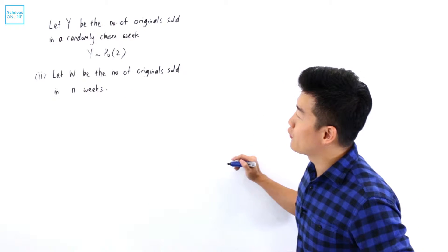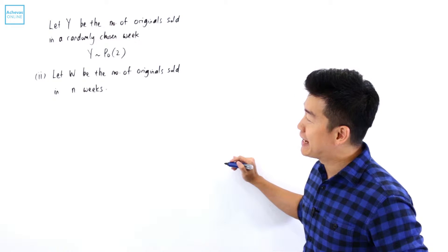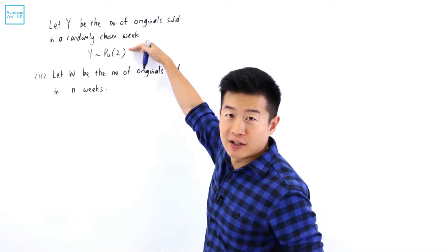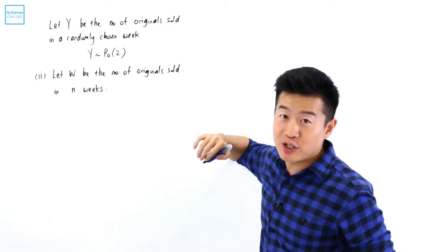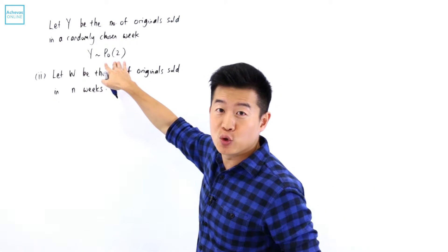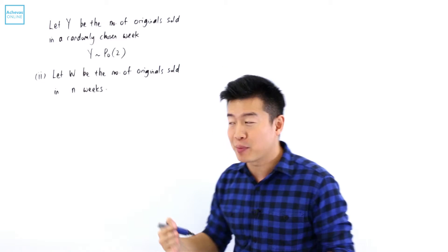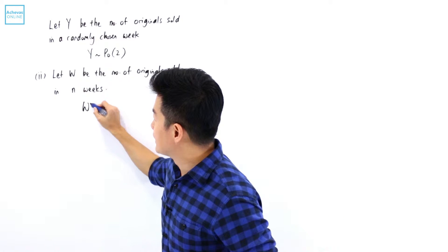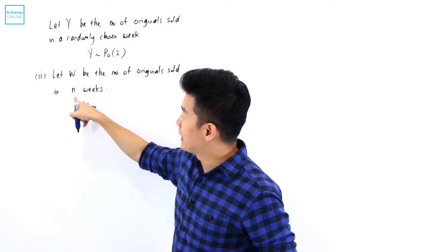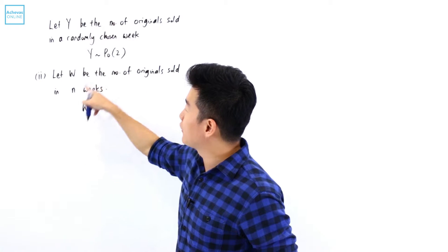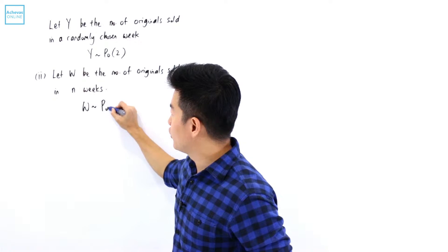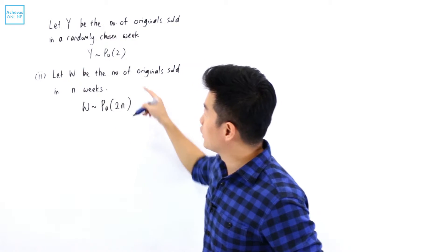Let W be the number of original paintings sold in N number of weeks. According to the question, for one week the number of original paintings sold follows a Poisson distribution with a mean of 2. Applying the scaling property of the Poisson distribution, W — the number of original paintings sold in N weeks — will follow a Poisson distribution with mean 2N.